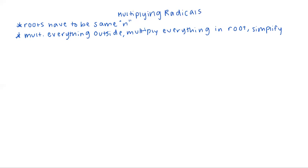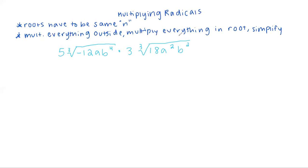In this example, we're going to multiply 5 times the cube root of negative 12ab to the fourth, times 3 times the cube root of 18a squared b squared. It looks really complicated at first, but stay organized and pair up things that match. We can solve this because we have a cube root with a cube root. We multiply everything outside the roots: 5 times 3 equals 15.